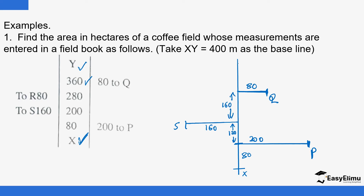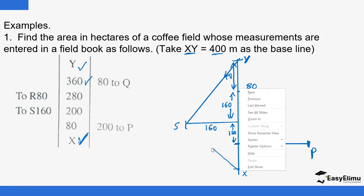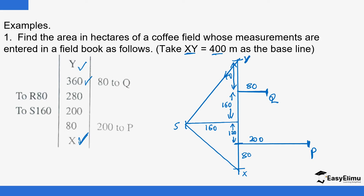Finally, to where Y is, the total length XY is 400 meters, giving the last segment a length of 40 meters. Then you join the boundary points: join this to that, join this to that, join this to this, and finally back to Y. You can see the respective shapes — we have triangles and a trapezium. So we'll label area A, then area B, then C, D, and E.